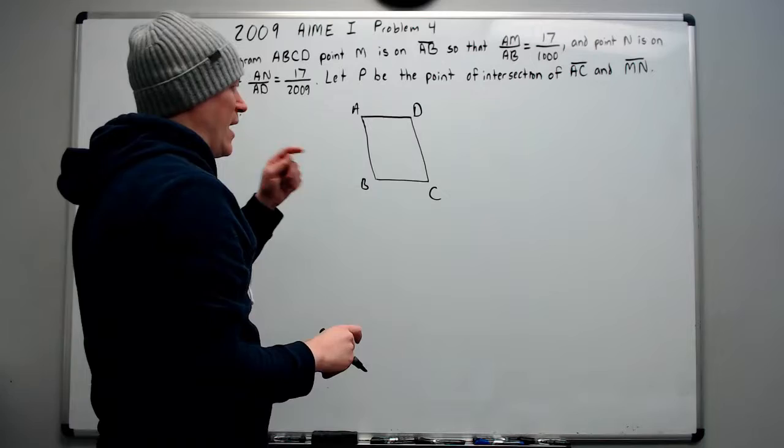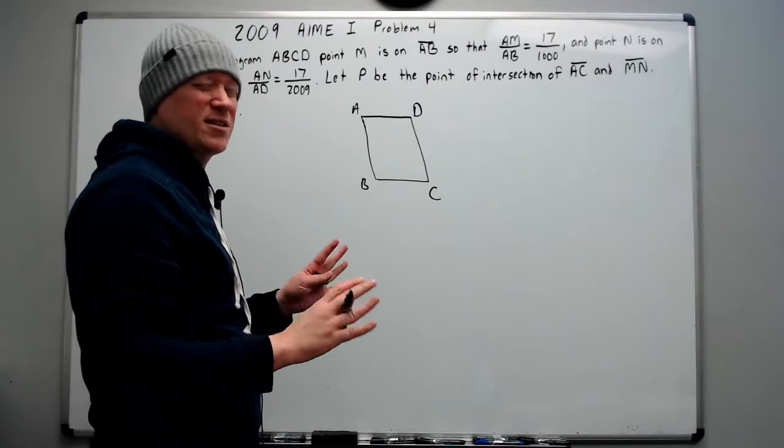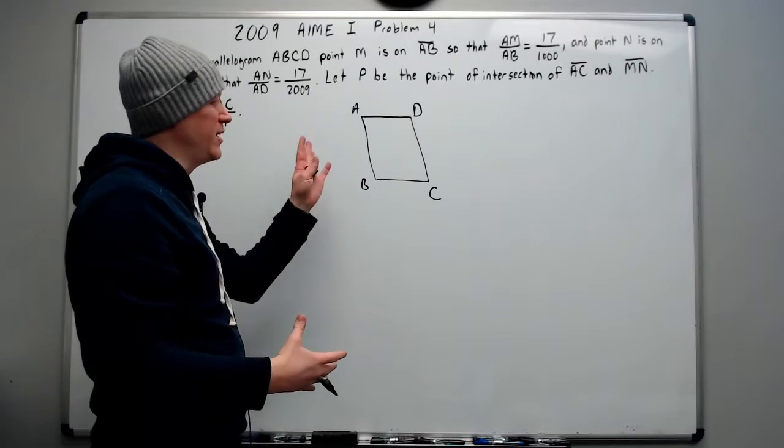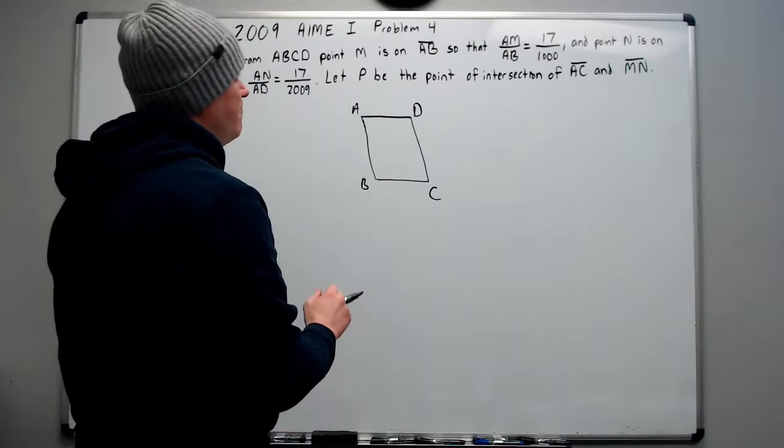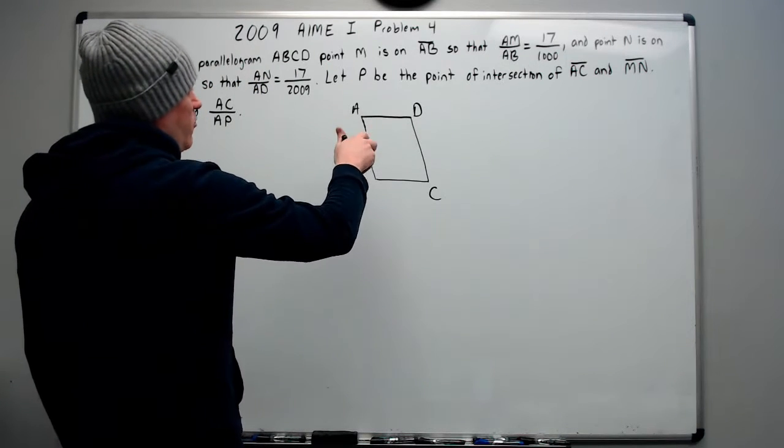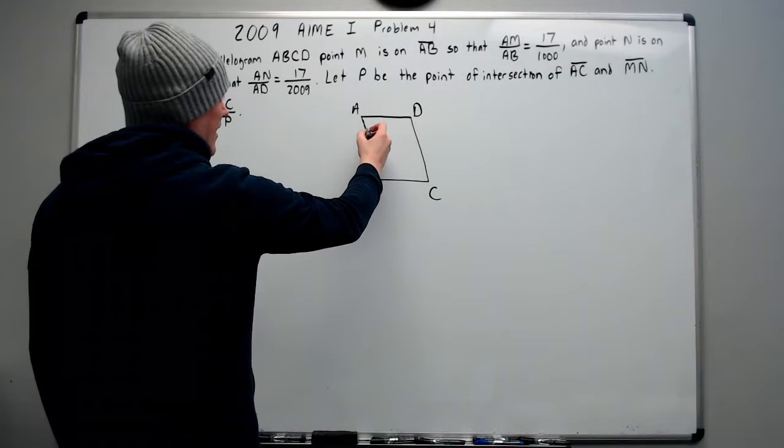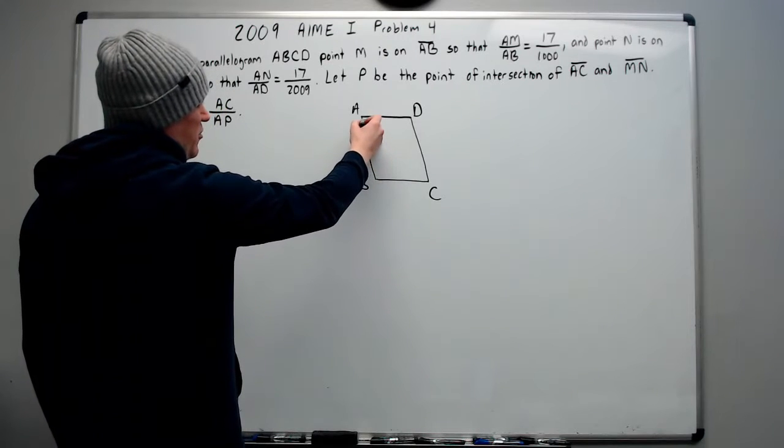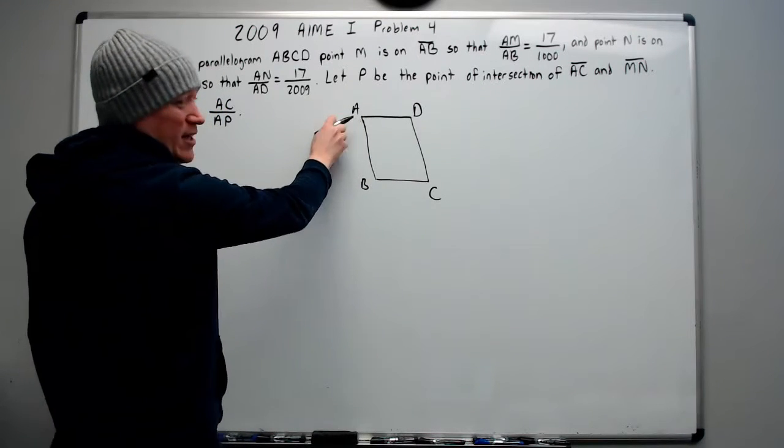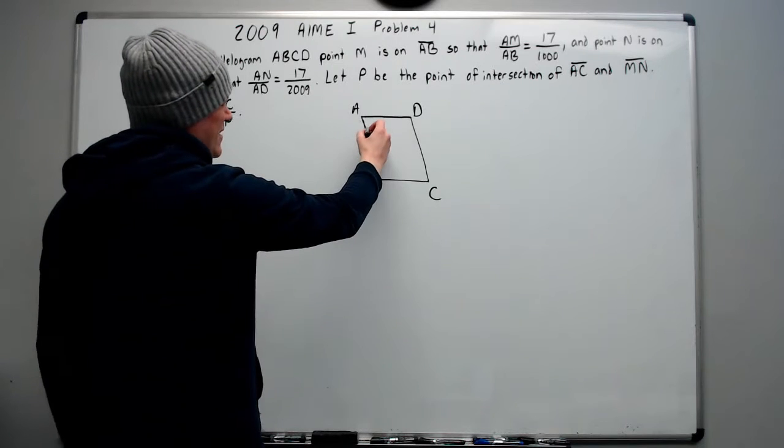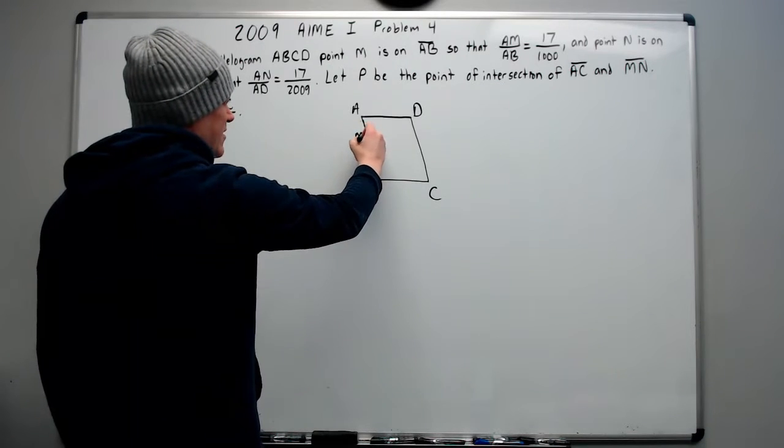It may turn out that the dimensions are improper, but we're just thinking about it conceptually. We don't really care if the image actually represents perfectly what we want. So we said that AM over AB is 17 over 1000. If I wanted to do that, M would be right up here, really close to A, but you can't really work with that. So just extend it out. Again, it's conceptual.